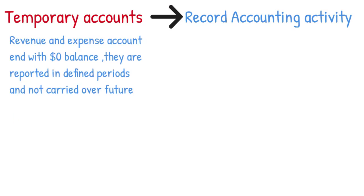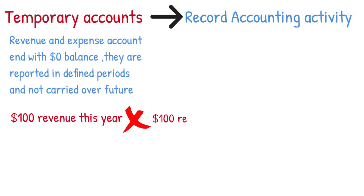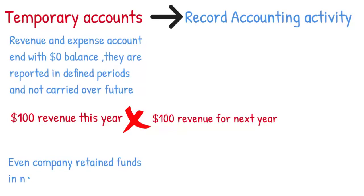For example, $100 in revenue this year does not count as $100 of revenue for next year, even if the company retained the funds for use in the next 12 months.